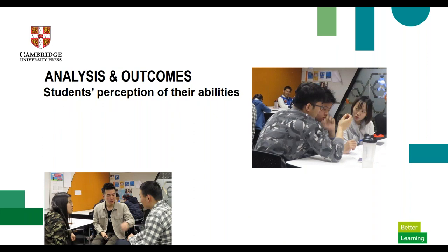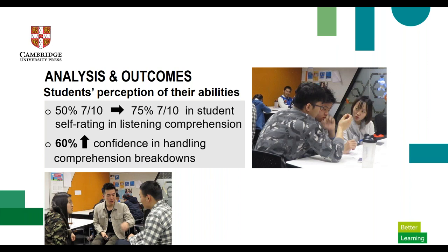What were our students' perceptions? In surveys, students initially rated themselves highly on listening comprehension in discussions — 50% rated themselves 7 out of 10 or more. By the end of the program, 75% rated themselves 7 out of 10 or more for listening comprehension in discussion. The main reason they gave for discussions not going well was not understanding each other and not knowing what to do when comprehension breakdowns occurred. By the end, they were more confident in handling communication breakdowns in discussion — there was a 60% increase in confidence.